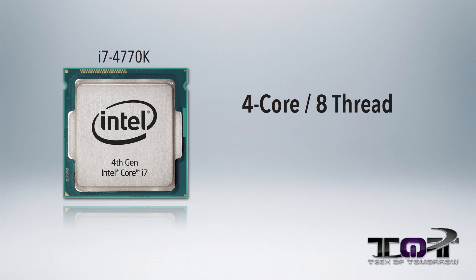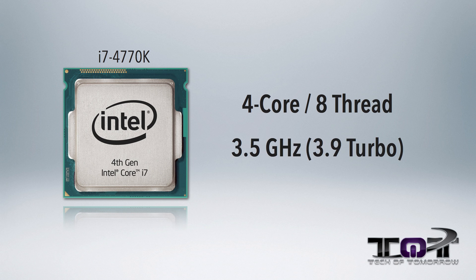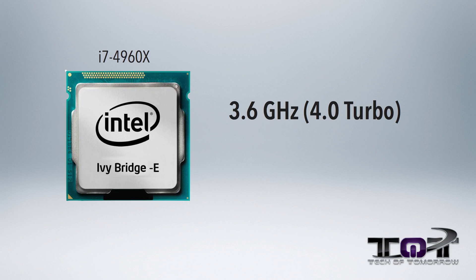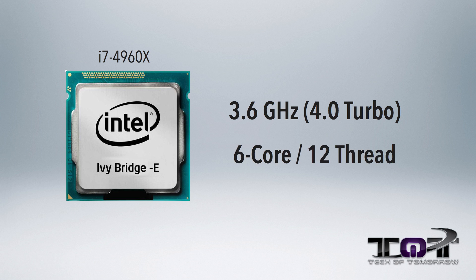As far as the processors go, the i7-4770K Haswell is a four-core, eight-thread CPU that comes to market at 3.5 gigahertz with a turbo boost of 3.9 gigahertz. The Ivy Bridge E comes to market at 3.6 gigahertz and has a 4.0 turbo boost. While these two CPUs are similarly clocked, things start getting different with the six-core, 12-thread configuration on the Ivy Bridge E.